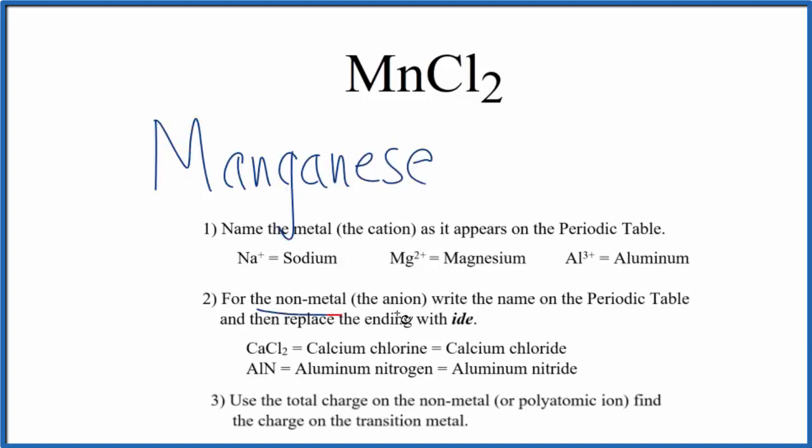Next, we write the name for the non-metal as that appears on the periodic table. For Cl, that's chlorine, we'll start with a lowercase c. And then we replace the ending with -ide. So we write -ide. And at this point, we have manganese chloride.